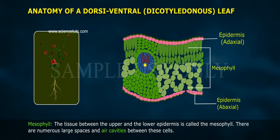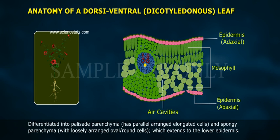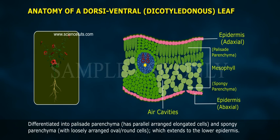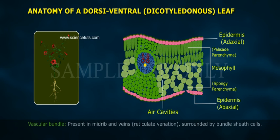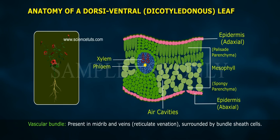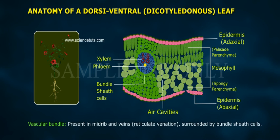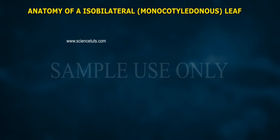Mesophyll is the tissue between the upper and lower epidermis. There are numerous large spaces and air cavities between these cells. It is differentiated into palisade parenchyma, with parallel arranged elongated cells, and spongy parenchyma with loosely arranged oval or round cells extending to the lower epidermis. It possesses chlorophyll and carries out photosynthesis. Vascular bundles present in the midrib and veins show reticulate venation and are surrounded by bundle sheath cells.